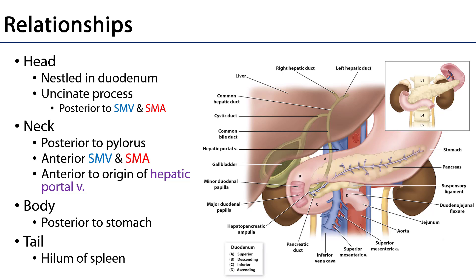Now let's take a look at the relationships of these parts of the pancreas to other organs. The head is very well snuggled by the duodenum. The duodenum has a nice C shape, and the robust head with all of the ducts conveyed through it is surrounded by the duodenum on three sides. The uncinate process is found posterior to the SMA and SMV.